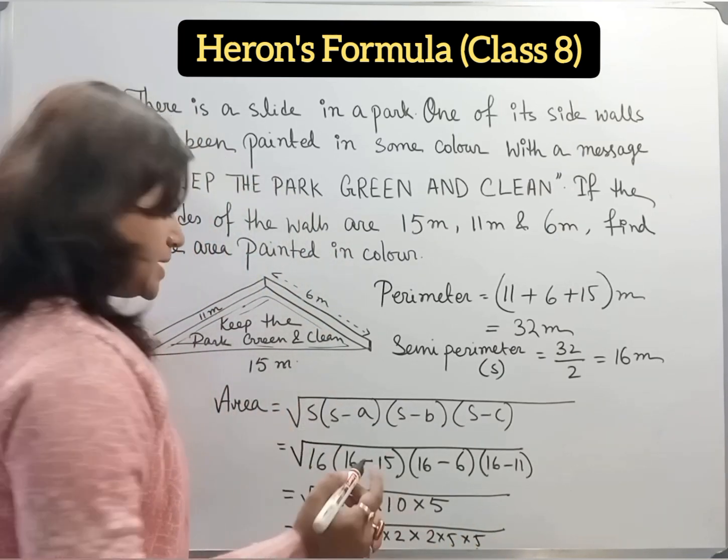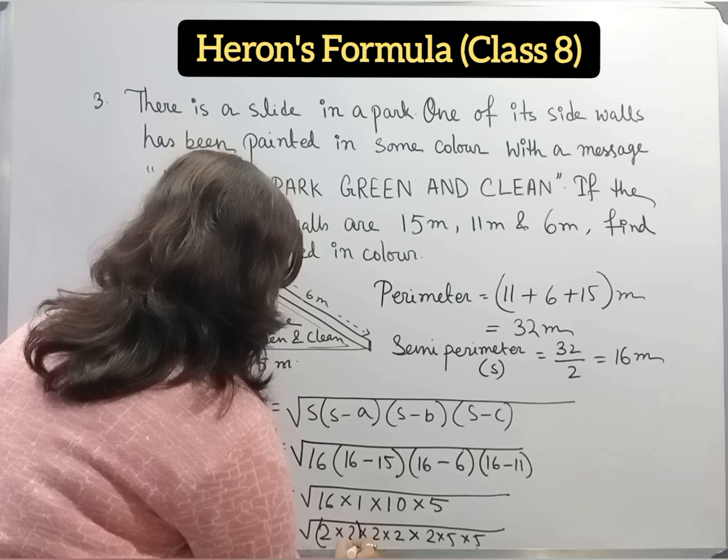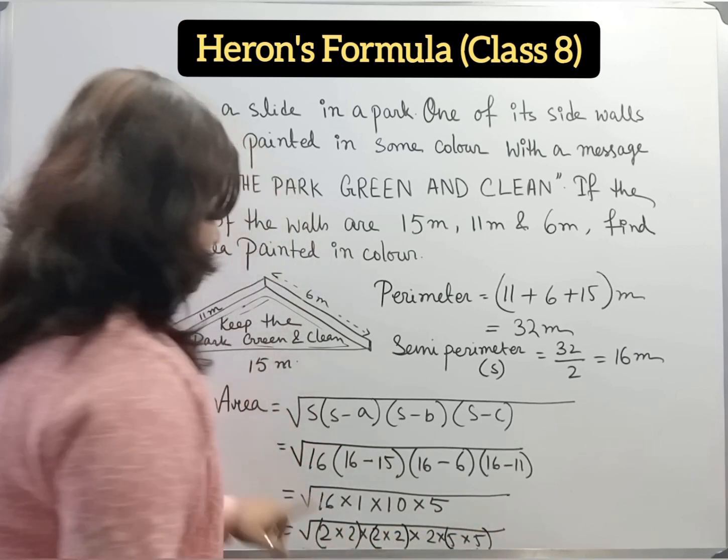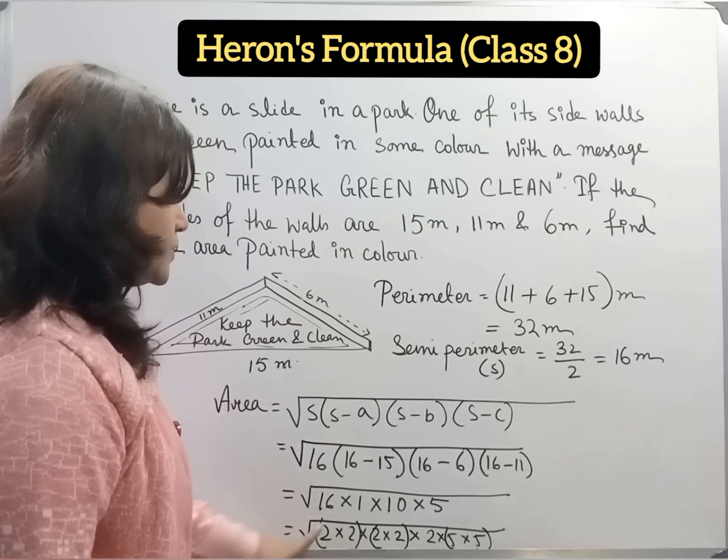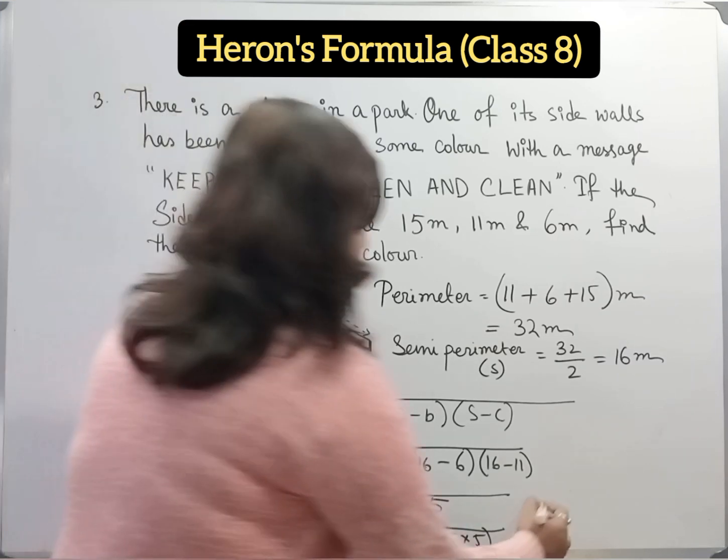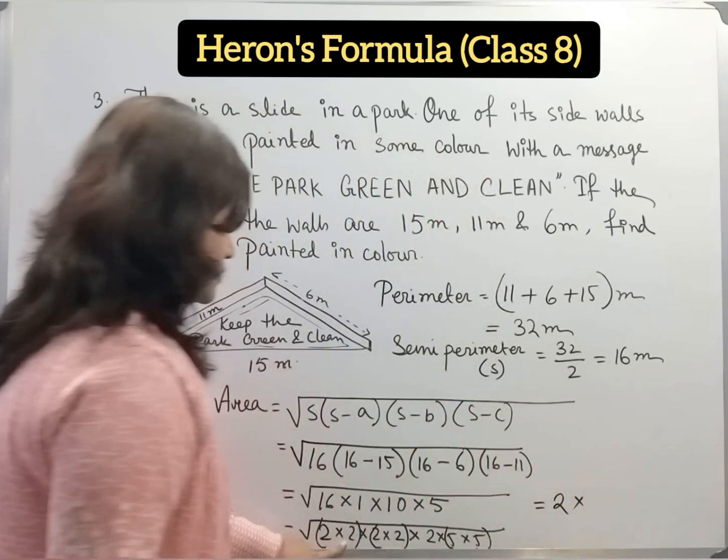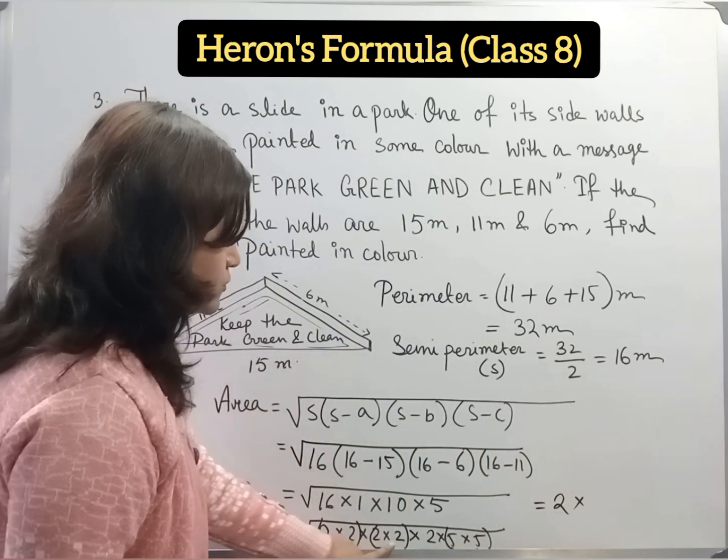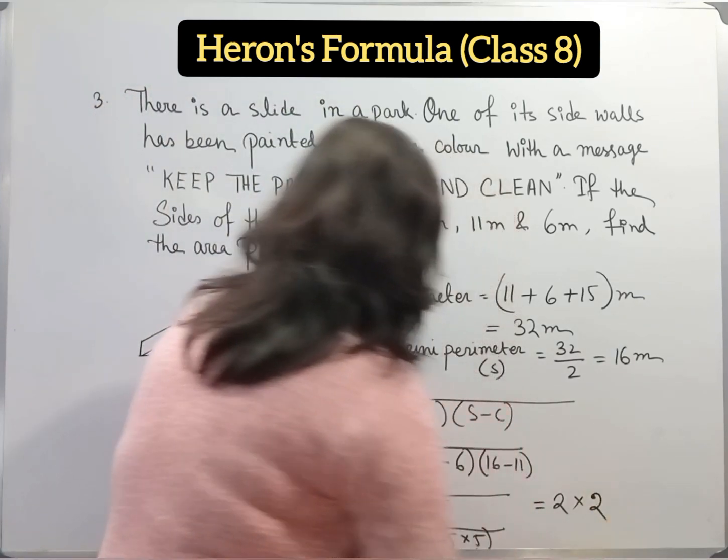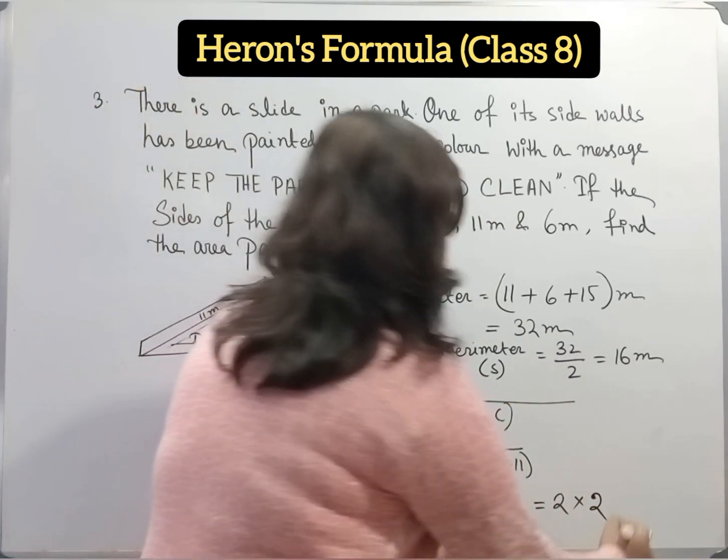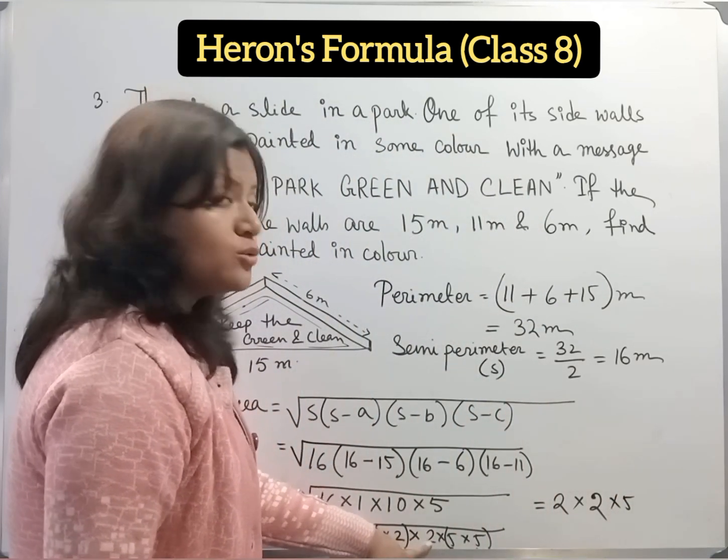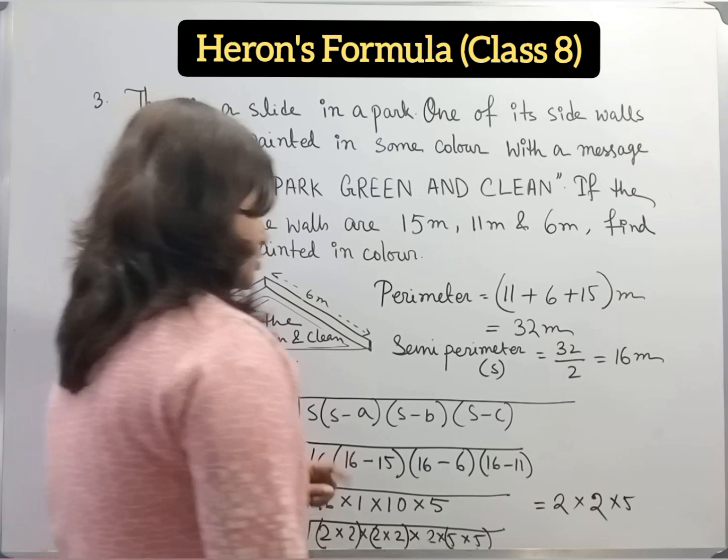Now we will make pair. So from this, when we remove this square root, from this first pair of 2 we will take a single 2. From this pair of 2 we will take a single 2. From this pair of 5 we will take 5. Now 1, 2 is left under the root.